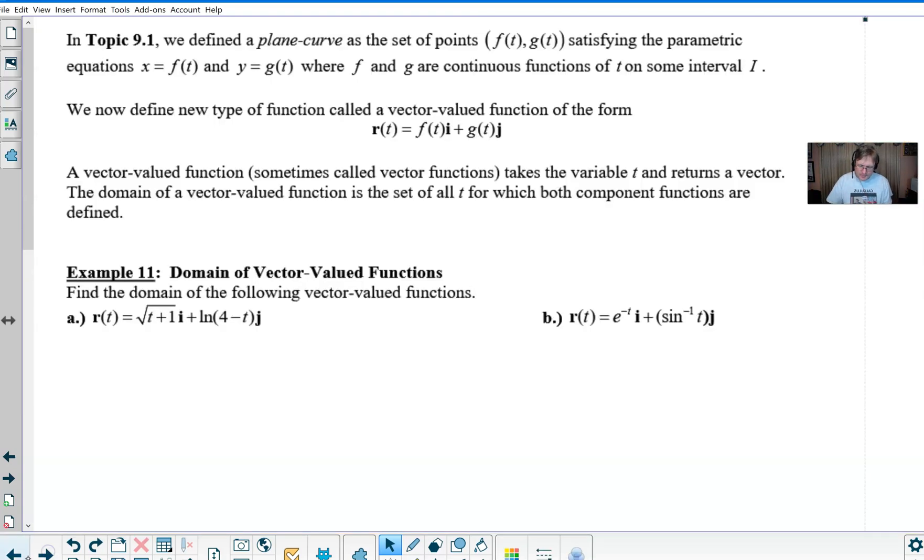Let's take a look at our example. For 9.1, that would be the very beginning of unit 9, we discussed and defined a plane curve. We used parametric equations, if you remember, and we called x = f(t) and y = g(t). We're able to do all sorts of things with them, and we knew that f and g had to be continuous functions of t on some interval I in order to be able to manipulate those.